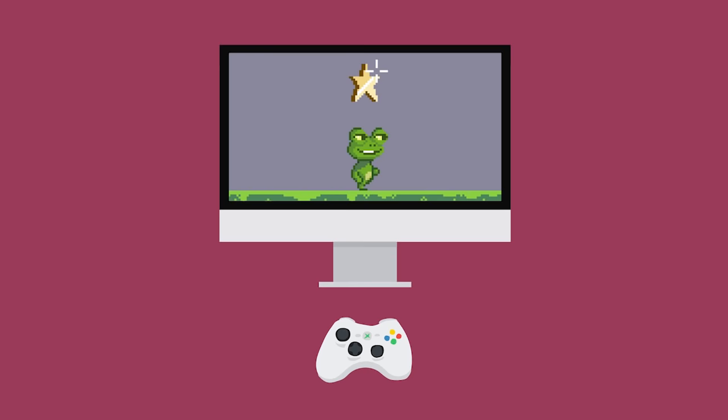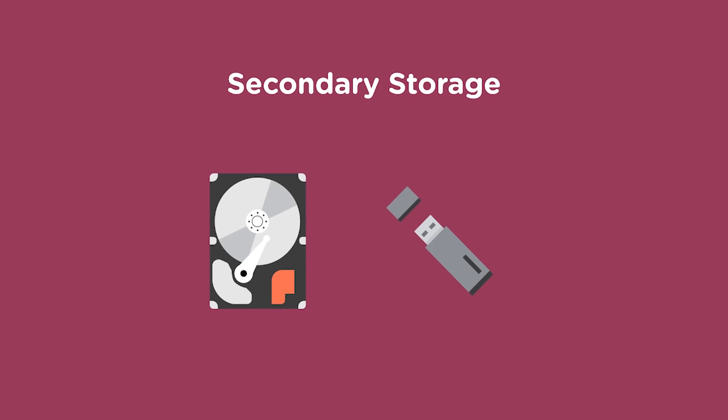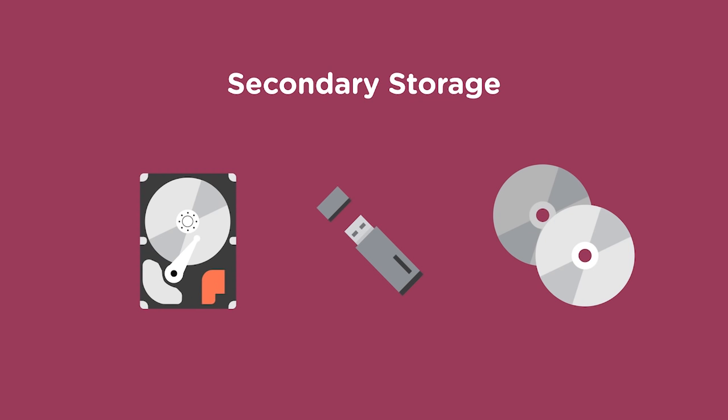A storage device retains digital data for later use. RAM serves as the primary memory of the computer. However, main memory is volatile, which means it's lost when your computer is powered off. For this reason, we rely on secondary and tertiary storage to save information permanently. Secondary storage can refer to the hard drive housed inside your device, a flash drive that plugs into a USB port, and even CD and DVD ROM discs historically popular for distributing music, movies, and software.